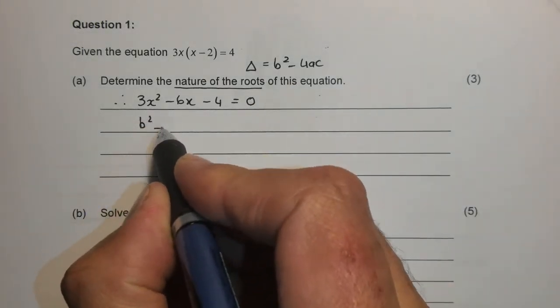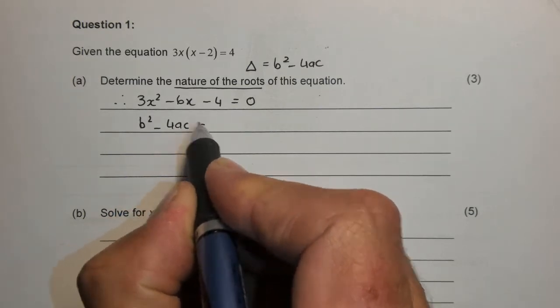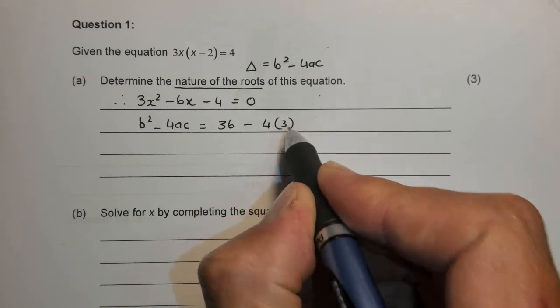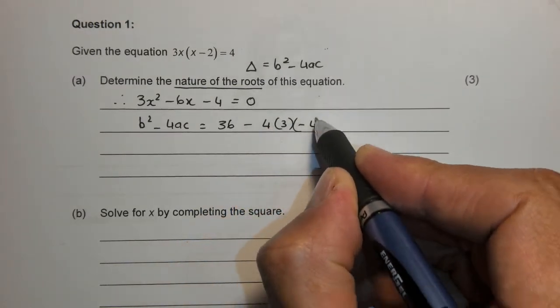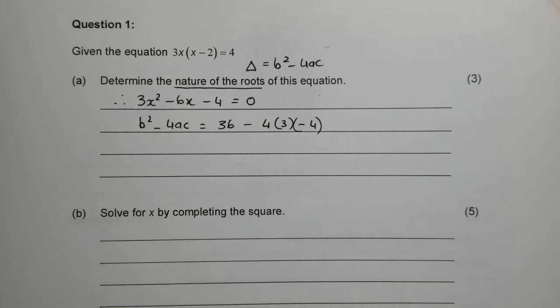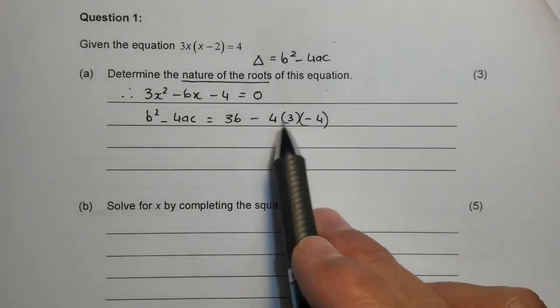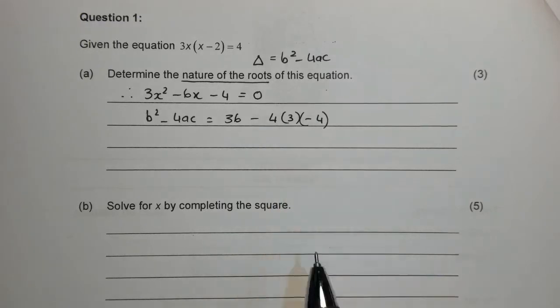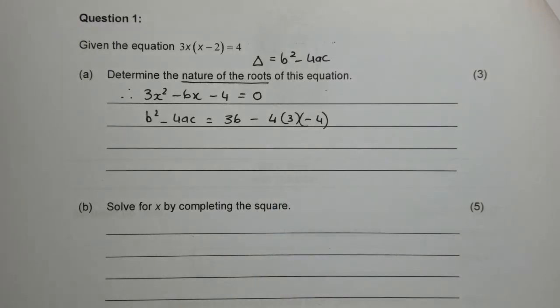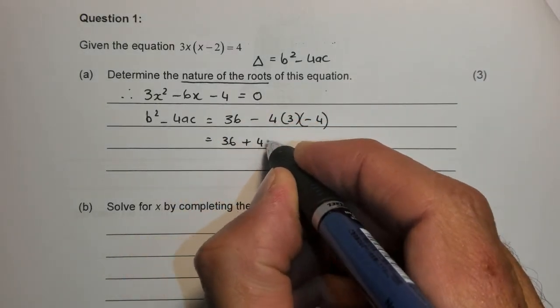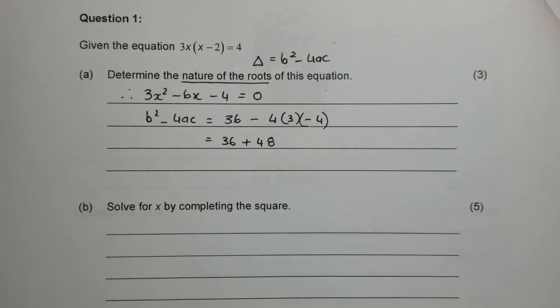So b squared minus 4ac is b is minus 6 squared is 36. Minus 4 times a times the c value. Now remember that is a positive 16 that we get here, plus 3, positive 16, and we times 16 by 3, we get the 48. So this is 36 plus 48, and that gives us a beautiful 84.